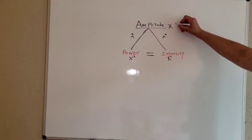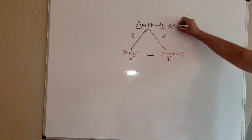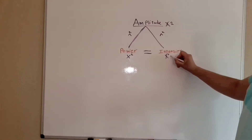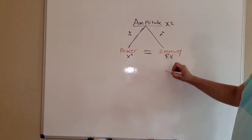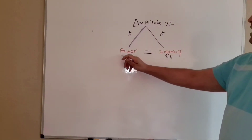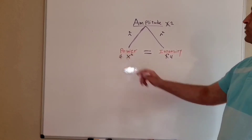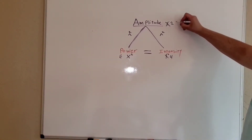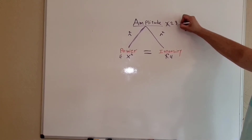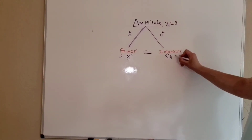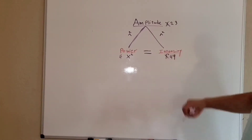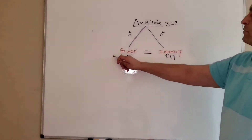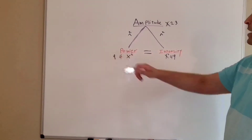For example, if the amplitude increases by a factor of 2, the intensity will increase by a factor of 4 and the power will increase by a factor of 4. If the amplitude increases by a factor of 3, the intensity will increase by a factor of 9 and the power will increase by a factor of 9 — because 3 squared is equal to 9.